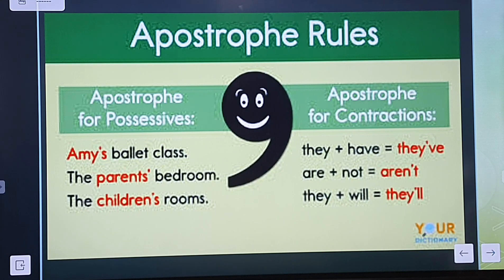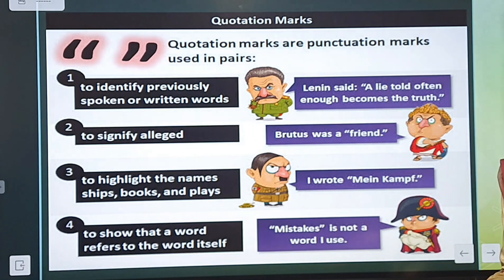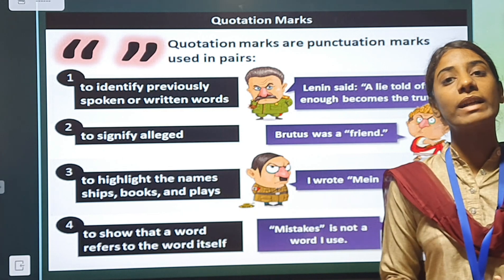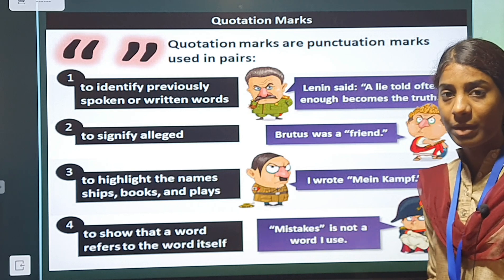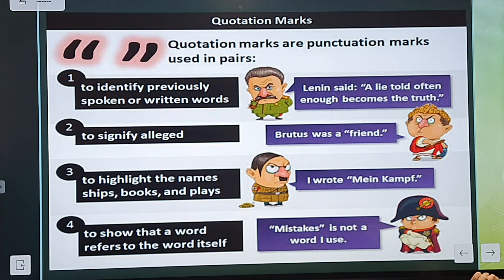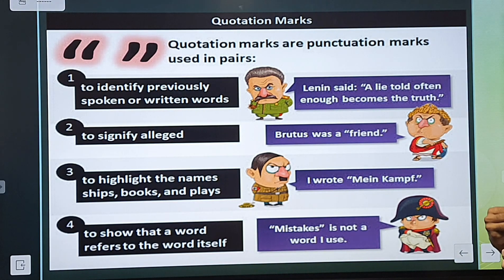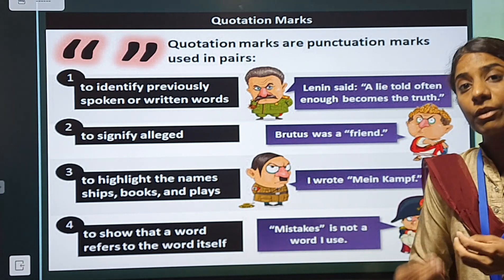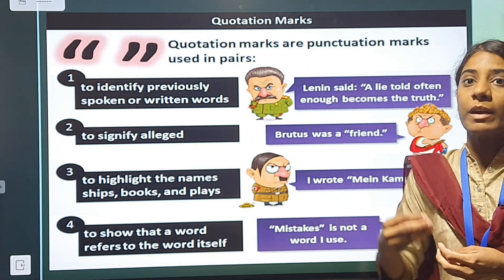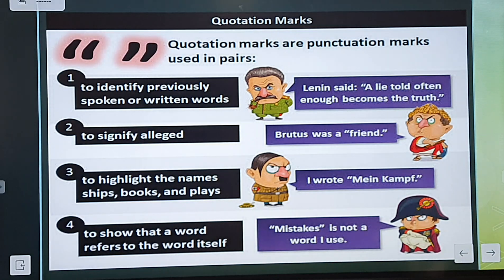Now we will learn about quotation marks. There are two sorts of quotation marks: single quotation marks and double quotation marks. Quotation marks are punctuation marks used in pairs to identify previously spoken or written words — if someone has said something significant or important, we put that in quotation marks.